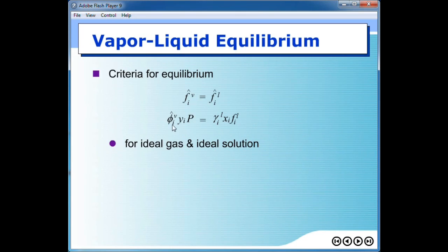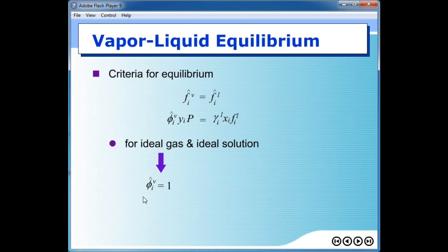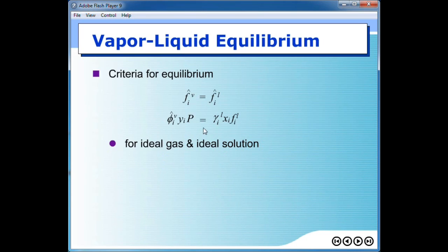However, this equation is quite complicated because of these two coefficients. So we are going to consider a simple case first. The most simple case is when the vapor behaves like an ideal gas and the liquid behaves like an ideal solution. This takes place whenever you have components that are really similar in molecular structure and the pressure of the system is quite low. If we apply the ideal gas assumption, the fugacity coefficient becomes 1. For the ideal solution assumption, the activity coefficient becomes 1.